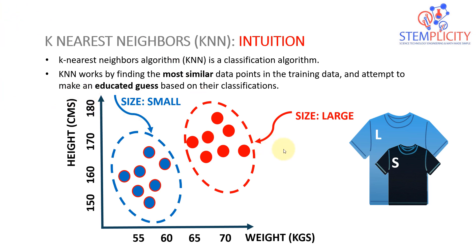These data points were collected from past customers. For example, if a customer is 60 kilograms and 165 centimeters, they'll most likely take size small. If they're 75 or 80 kilograms and 170 centimeters, they'll likely be large. Now to the main question: given a new data point, should we assign them small or large? That's the question K-Nearest Neighbors answers for us.